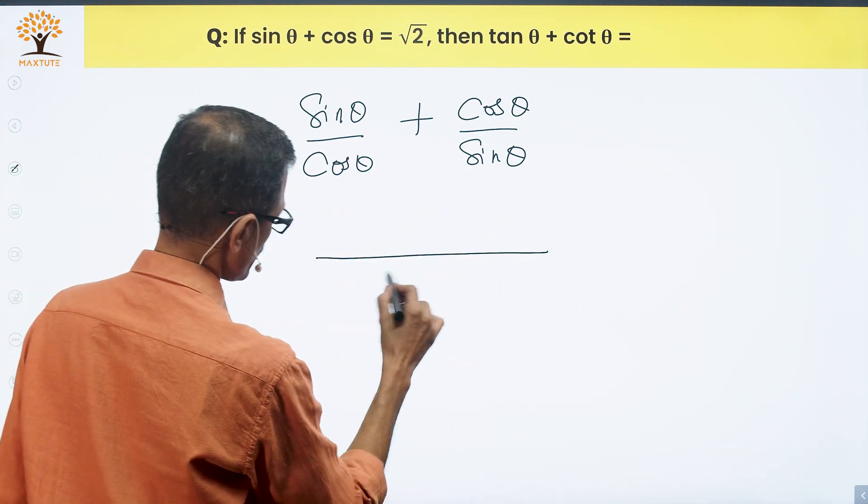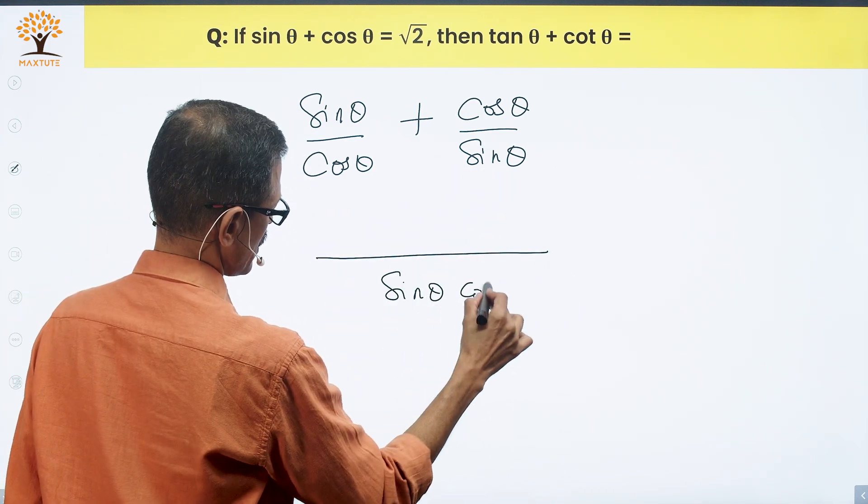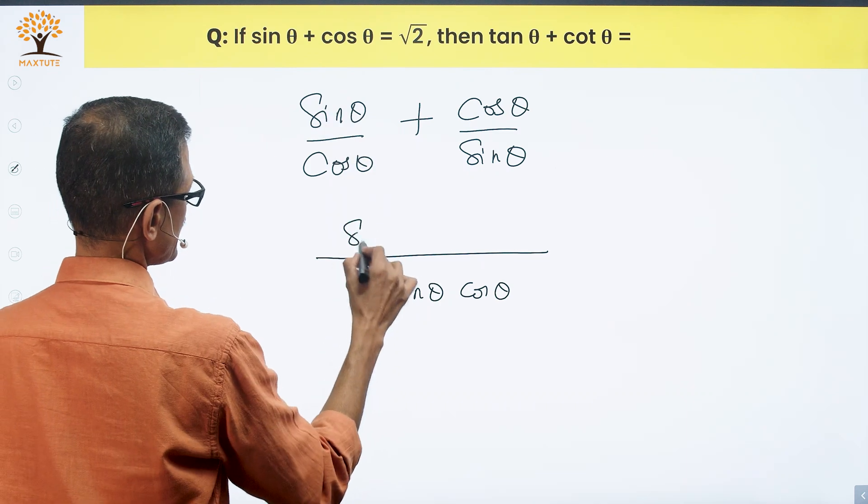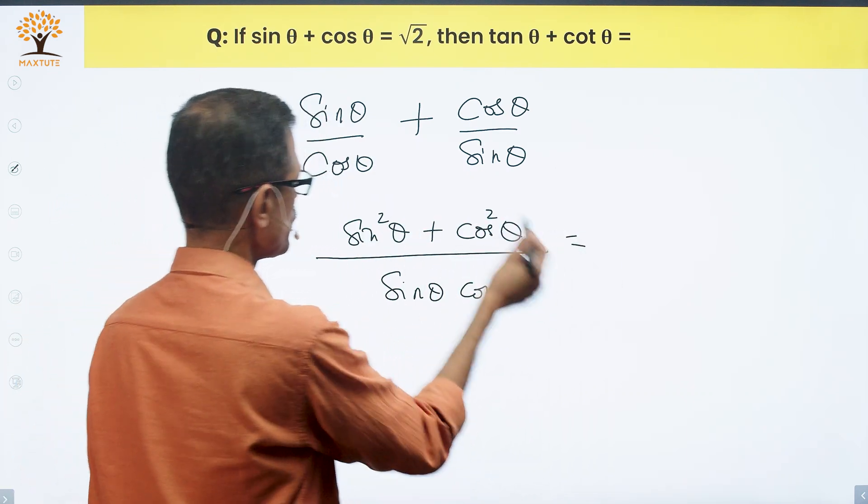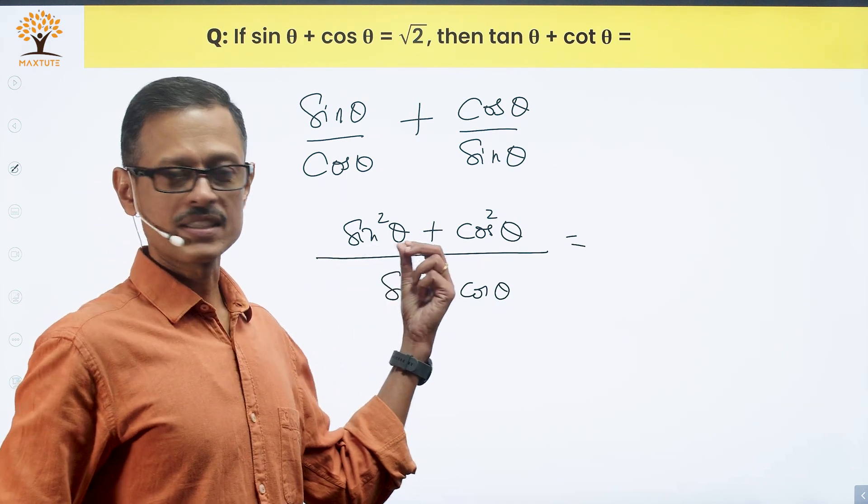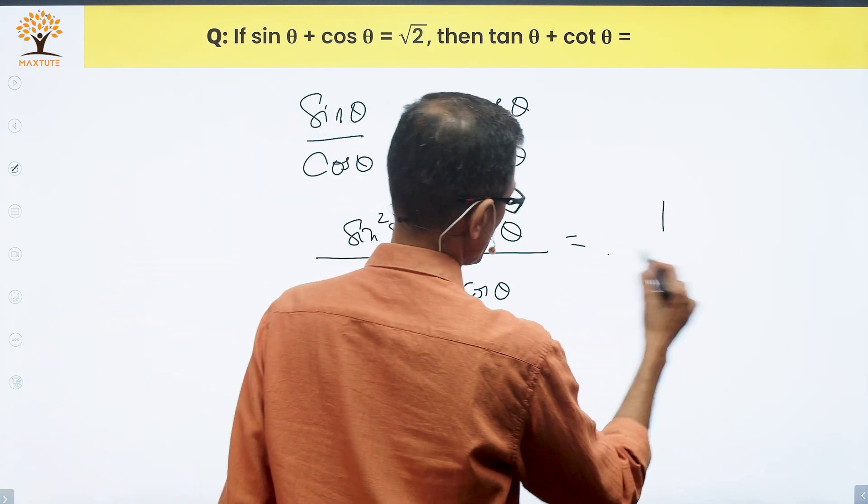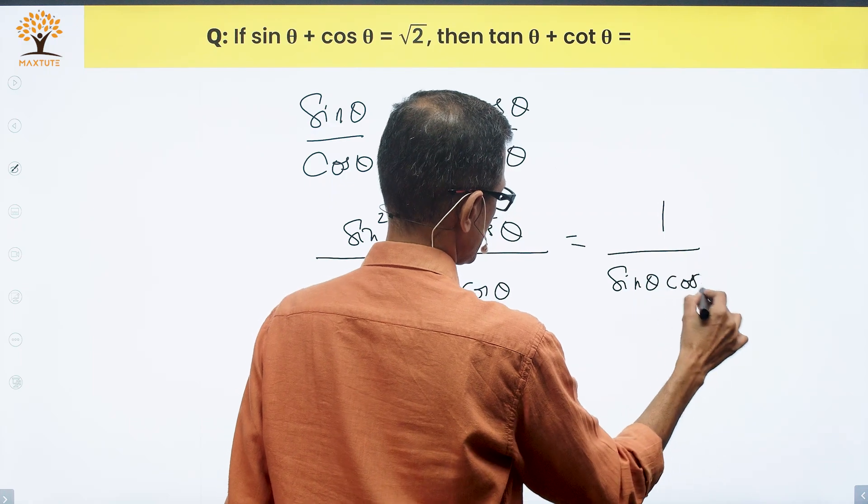Take the common denominator as sin theta cos theta. We'll make it as sin square theta plus cos square theta. We know sin square theta plus cos square theta is equal to 1. So this is equal to 1 by sin theta cos theta.